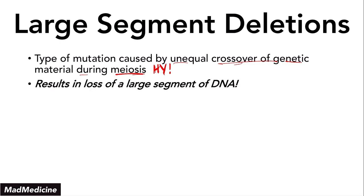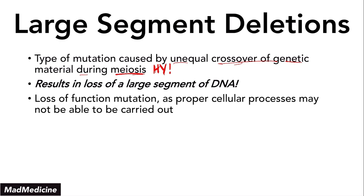If that other cell becomes the one that takes part in becoming a zygote, then you will have a zygote with a large segment deletion. Depending on where the deletion is, it will determine what type of disease it will be. During this process, you will lose that large part of DNA. This is a loss of function mutation — you will not be able to produce the proper proteins. Cellular processes will be impaired, and depending on how severe and how large the deletion is, that will determine how severe the disease will be.